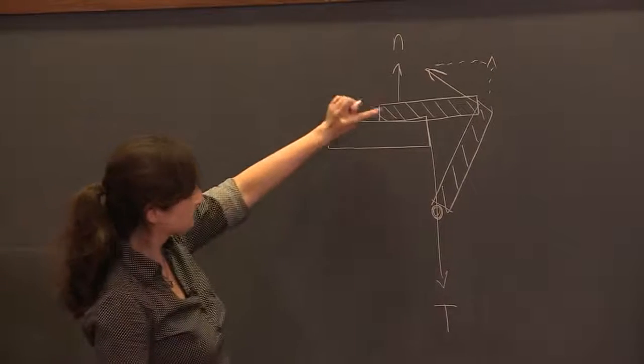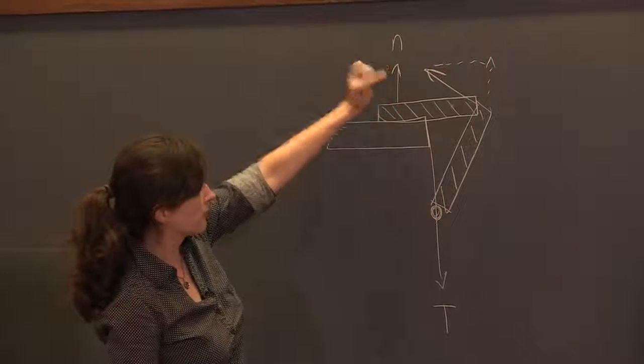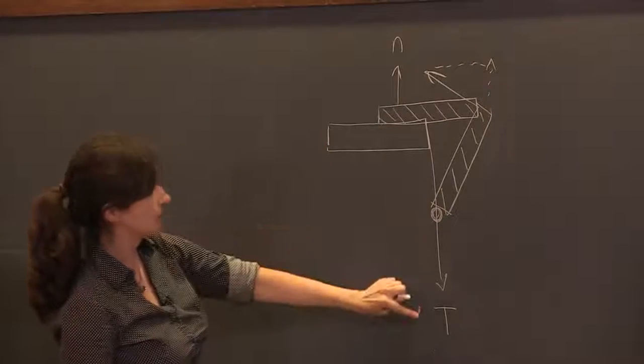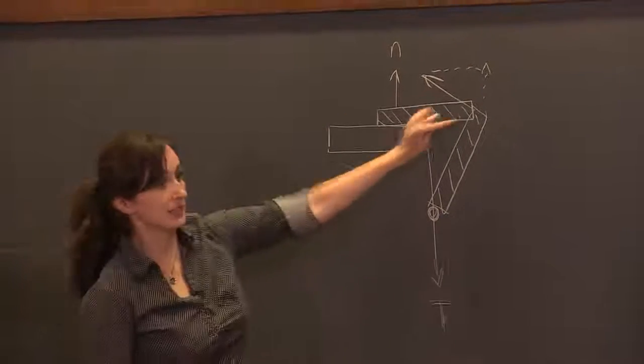So now you can see that between this upward normal force, this upwards component, and the downwards tension, the net torque on this matchstick is going to be zero.